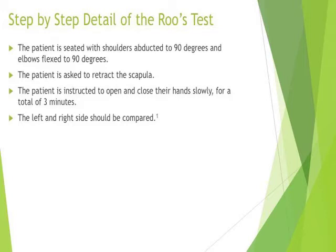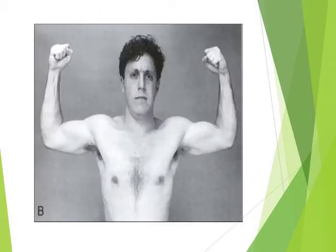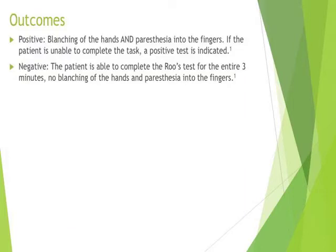A step-by-step detail of how the Ruse Test is carried out was given by Dr. Dan Pinto of NUPT in class notes. The patient is to be seated with shoulders abducted to 90 degrees and elbows flexed to 90 degrees. The patient is then asked to retract the scapula. The patient is further instructed to open and close the hands slowly for a total of three minutes. The number of repetitions can be used to monitor progress or compare left to right. Positive findings include blanching of the hands and paresthesia into the fingers, or if the patient is unable to complete the test for three minutes. Negative signs include completing the full three minutes with no blanching or paresthesia.